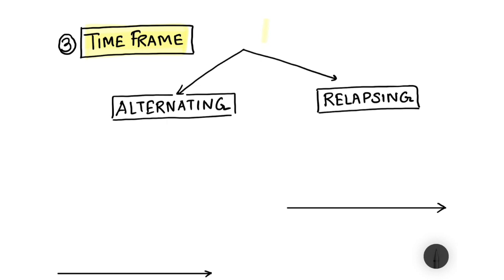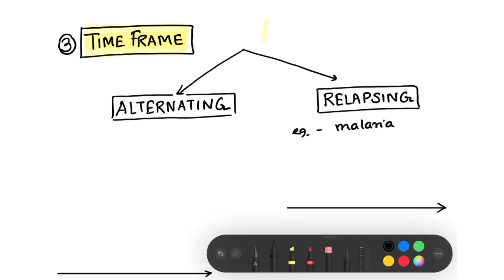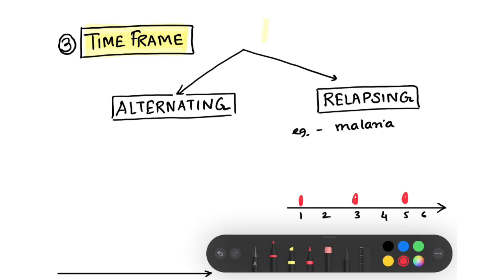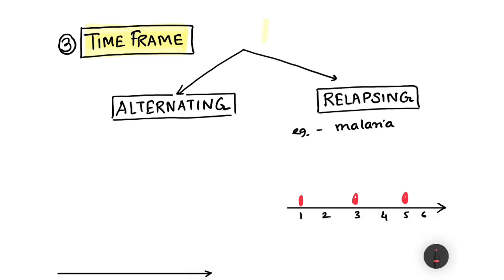Now the time frame of fever — fever can be relapsing or alternating. Relapsing fever means the fever recurs at intervals. For example, in Plasmodium vivax malaria: day one you get fever, day two no fever, day three fever again, day four no fever — so the fever relapses every second day with a gap of one day. Based on this pattern, malaria fevers are named tertian, quartan, or quotidian malaria, which we will cover under fluctuations.